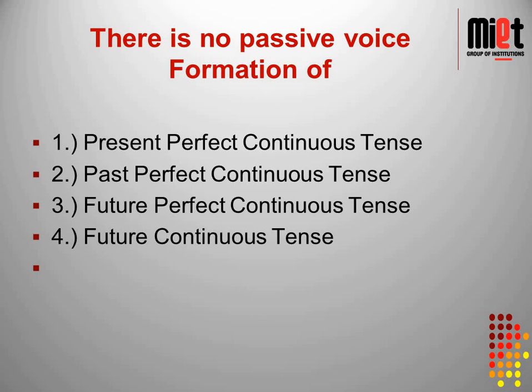There is no passive formation for present perfect continuous tense, past perfect continuous tense, future perfect continuous tense, and future continuous tense. Thus we have eight tenses in passive voice. Also, intransitive verbs cannot be converted to passive voice, because a transitive verb needs an object, and to make a sentence passive we need an object. Intransitive verbs do not require an object, so they cannot be turned into passive voice. Thank you.